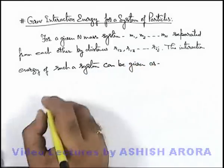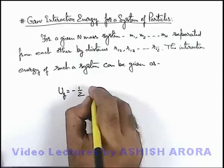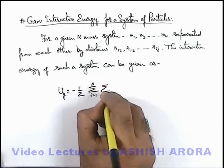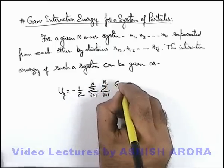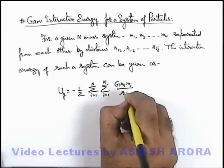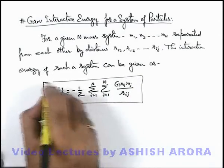In this system, this gravitational energy Ug we can write as it is negative of half of summation of i equal to 1 to n, summation of j equal to 1 to n, and it is G mi mj by rij.